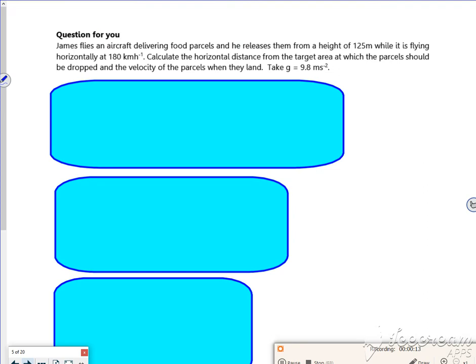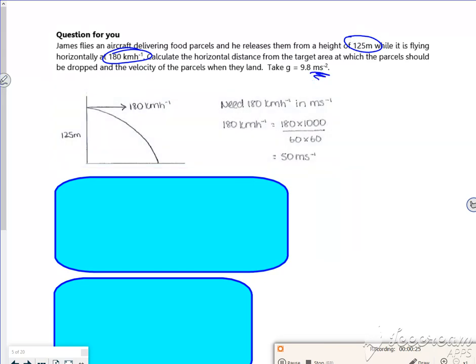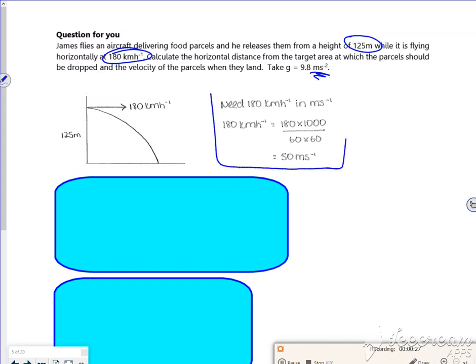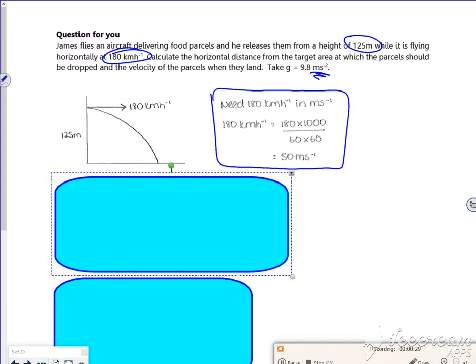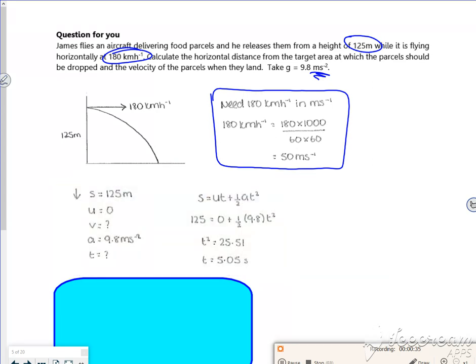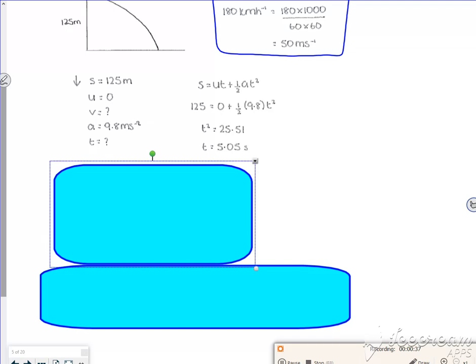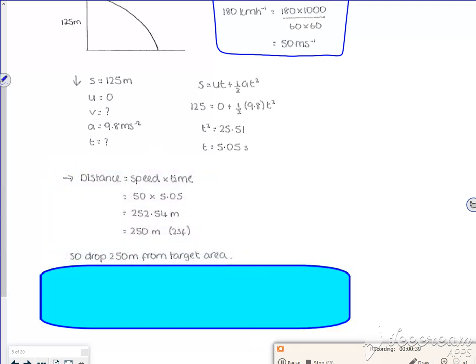If you look, you've got a units error - kilometers per hour. What we really want is meters per second, so we need to make sure you change. There you go, look, there's the change. You've got to make sure you have consistent units - meters per second.